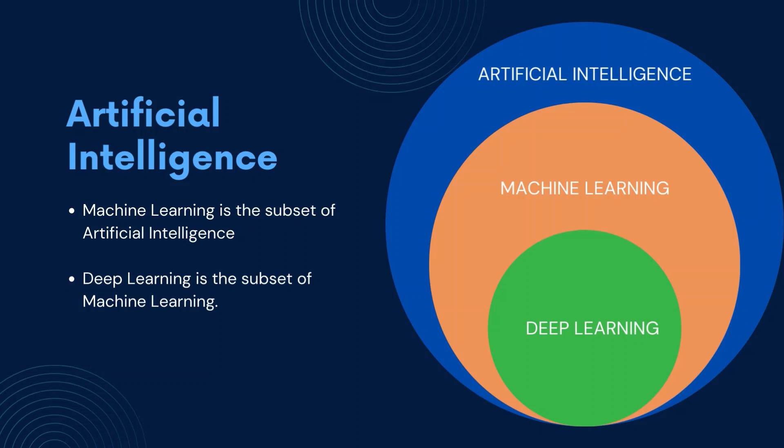No doubt, deep learning does have higher accuracy compared to machine learning algorithms. But that doesn't mean that machine learning is the next version of AI, or that deep learning is the next version of machine learning. It is just a field or a subfield. Other than machine learning, there are many things artificial intelligence can do, and machine learning also has more tasks beyond deep learning.